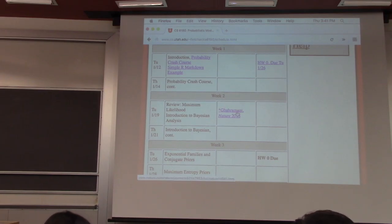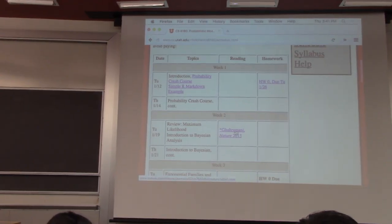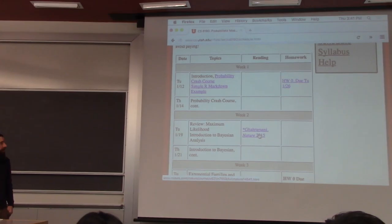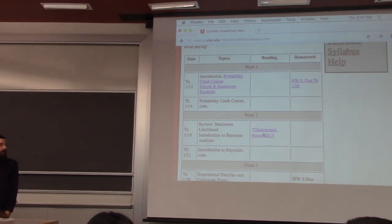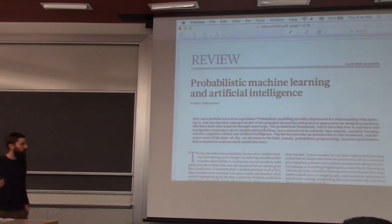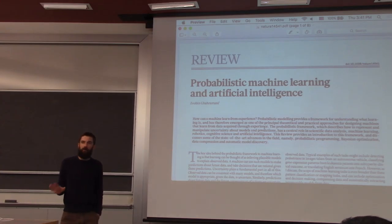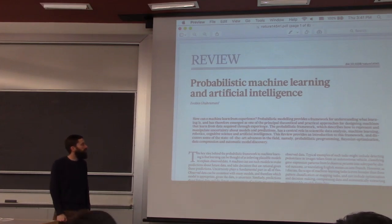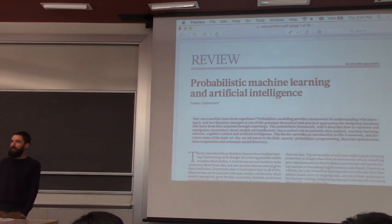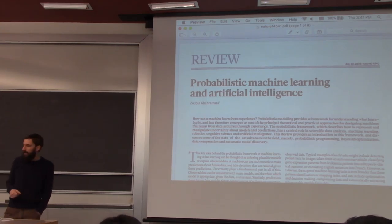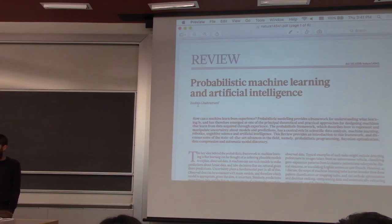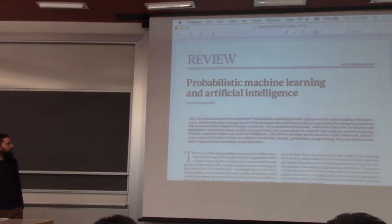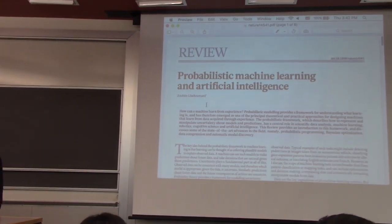In the reading material column, I've got a link to a paper just last year in Nature by Ghahramani. This paper is a review article, very non-technical — it's kind of for the lay person. I thought it was a good overview of probabilistic machine learning, what it's all about at a high level. Those of you familiar with machine learning may recognize his name. We'll probably read a few other articles by him as we go through the semester.